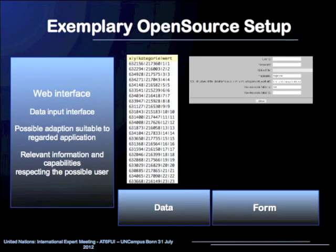Now the single steps are regarded more precisely. Here you can see the web interface for data input. Since this is a simple HTML form, it can be adapted suitably to the regarded application and with respect to the possible user. On the left hand side you can see the data format — it is a simple CSV file with coordinates of certain points and certain values important in the regarded context. For example, those could be weather stations at certain coordinates providing data of temperature, pressure, or rainfall.